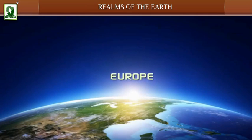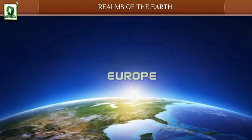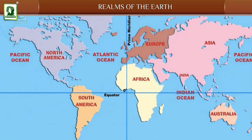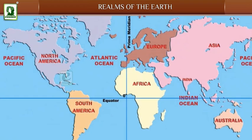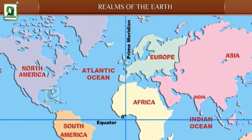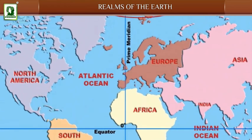Europe: Europe is the second smallest continent. Europe shares its boundaries with the Arctic Ocean in the north and the Atlantic Ocean in the west.